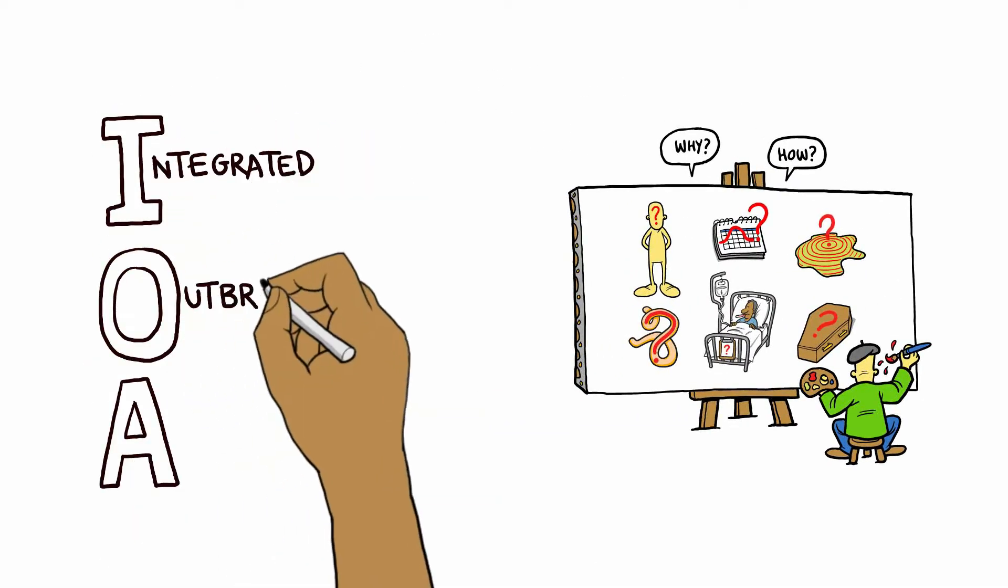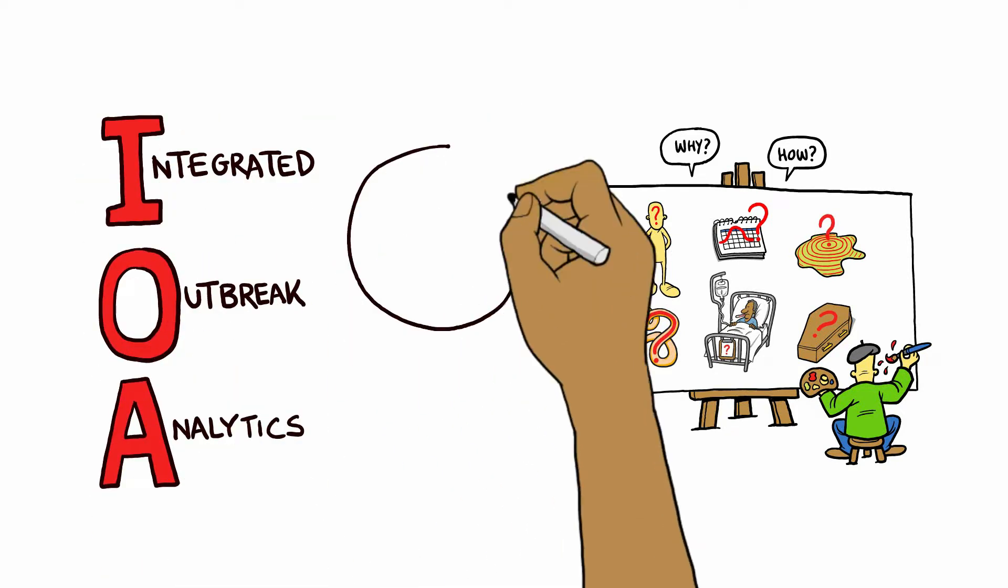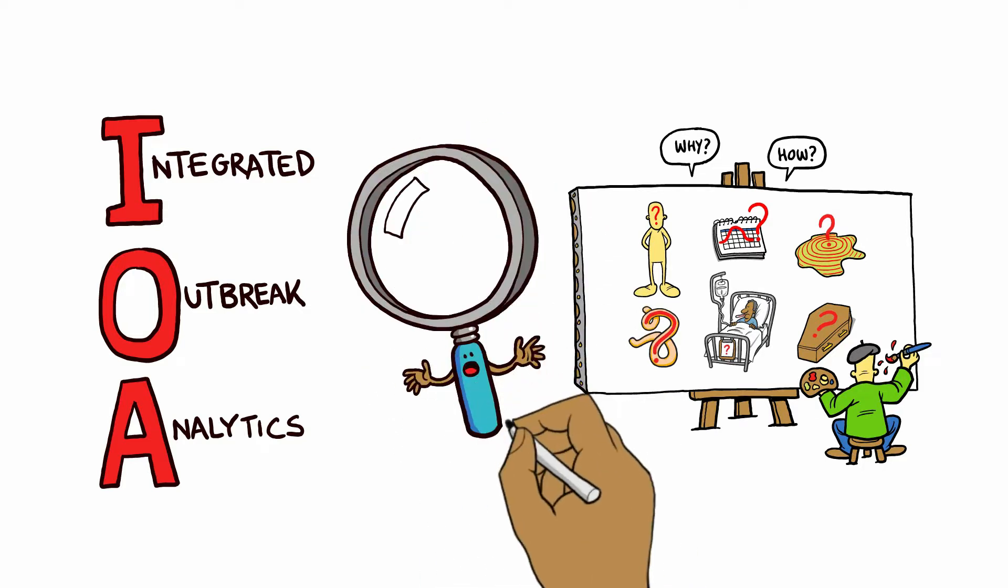IOA, or Integrated Outbreak Analytics, is an approach to better understand outbreak dynamics. IOA tells us why a disease occurs in a particular location or community at a particular time, and how the disease as well as response activities affect the communities.